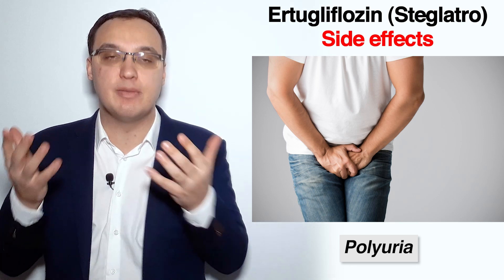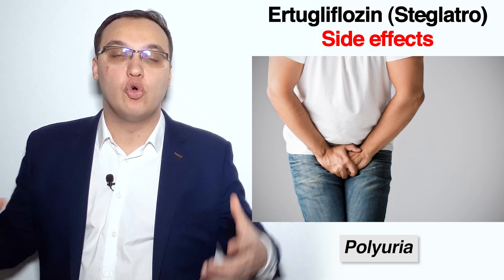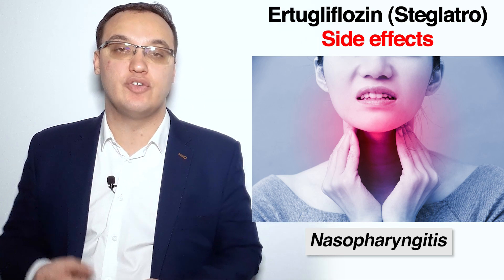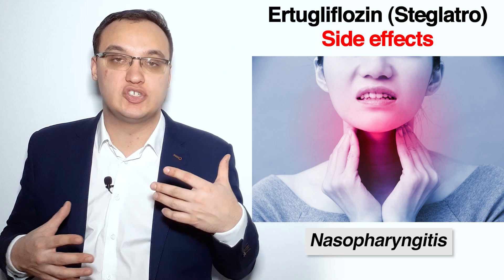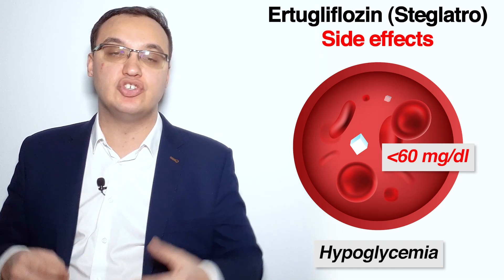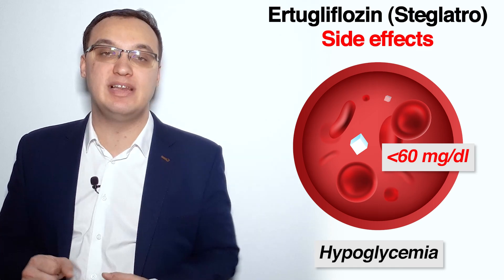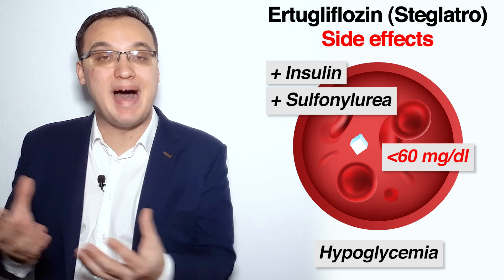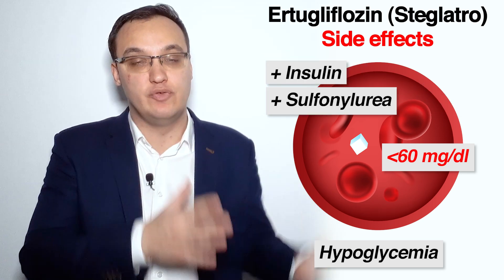Side effects of Steglatro include nasopharyngitis, which is an inflammation of the nasal and throat region, as well as urogenital tract infections and polyuria. Hypoglycemia — a blood glucose level of less than 60 milligram per deciliter — can also occur, especially when Steglatro is combined with insulin and sulfonylurea.